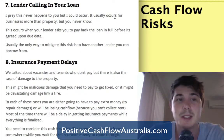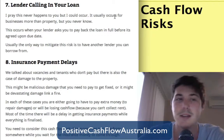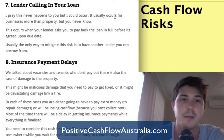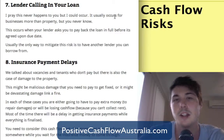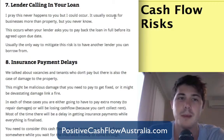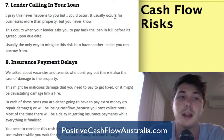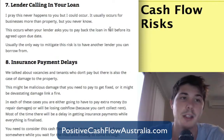Risk number seven, which I hope never happens to you, is lenders calling in your loan. It's unpredictable — you can't know why it's going to occur. What it means is that the lender is asking you to pay back the loan in full before the agreed upon due date, asking you to pay it back within the next eight weeks rather than over 25 years. Usually the only way to mitigate this risk is to find another lender, otherwise you've got to sell the property to pay off your debt.